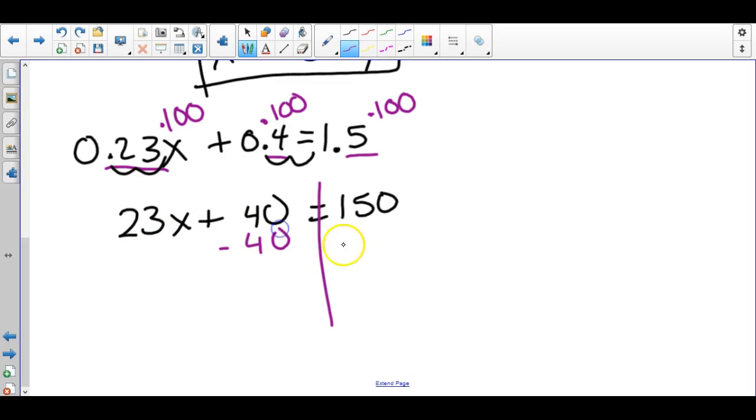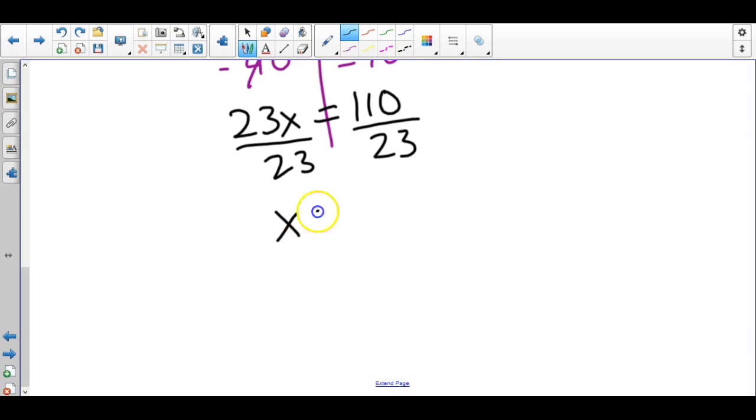I just do opposites: minus 40 from both sides. 23x equals 110. Divided by 23 from both sides. Now this one, since we started out with decimals, they will probably want the answer as a decimal. So we'd get 4.782, and it would keep going.